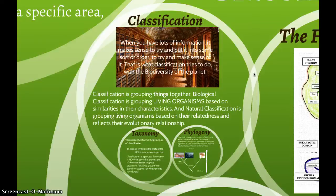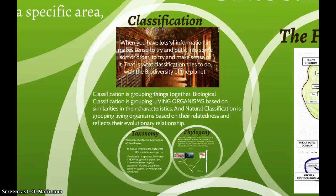Classification, if you just think about the term, essentially means to organize objects based on whatever criteria you wish. So if we have a lot of information about different types of species, do we just accept that there's a lot of variety, or do we try to make sense of this variety? Is there more structure than we can appreciate at first glance, and if so, what is that structure implying?